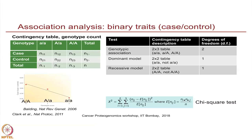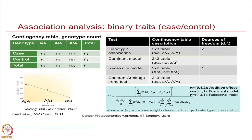Sometimes there may be an additive effect — where the number of minor alleles is kind of linearly associated with the proportion of cases in the population. If we simply do the chi-square test, we will not be able to capture that relationship. So people have come up with the Cochrane-Armitage trend test. With this test, by adjusting the weights (the w's in the formula), you can test the additive effect by setting w as 0, 1, 2 in the formula.